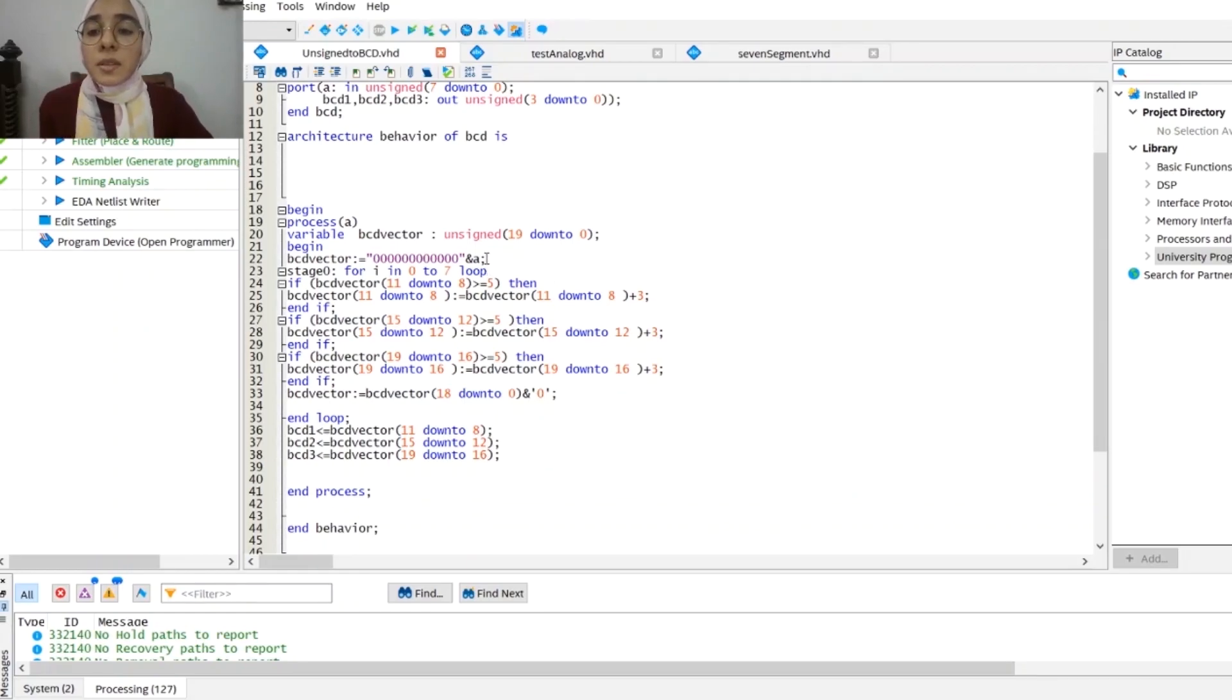Inside the architecture we have a variable that is 20 bits. We concatenate 12 bits to the input vector. The first four bits represent the units, the second four represents the tens, and the third four represents the hundreds of the BCD number we want to display.